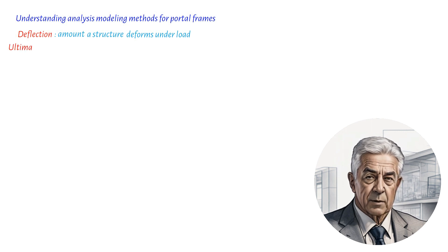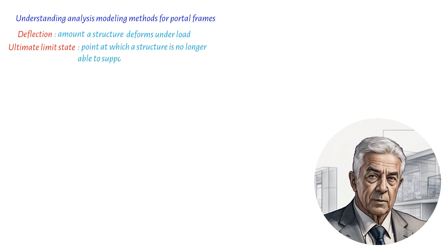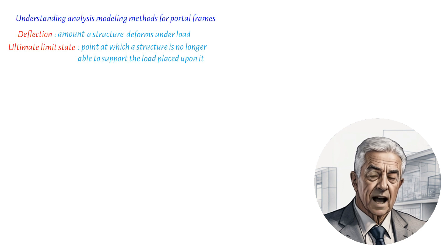Second, ultimate limit state is the point at which a structure is no longer able to support the load placed upon it. This is also known as the point of collapse and it's an important factor to consider when analyzing portal frames.